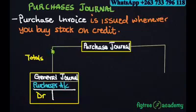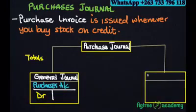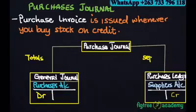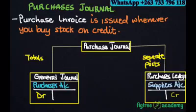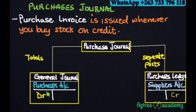We debit the Purchases account in the general ledger. On the credit posting, we post to the Purchases Ledger in individual supplier accounts — separately. The totals are debited to the Purchases account in the general ledger because this is a non-personal account, while the individual accounts are personal accounts posted separately. But the total of these individual accounts must equate the total posted to the Purchases account.